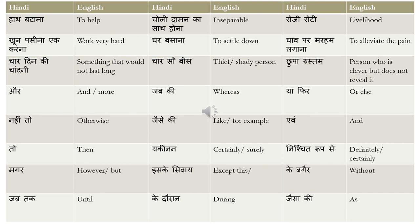Back to joining words: 'or' means 'and' or 'more'. 'Jab ki' means 'whereas'. 'Yaa phir' means 'or else'. 'Nahi toh' means 'otherwise'. 'Jese ki' means 'like' or 'for example'. 'Evam' means 'and'. 'Toh' means 'then' — for example, 'agar yeh karoge toh yeh hoga' means 'if you do this then this will happen'. 'Yakinan' means 'certainly' or 'surely'. 'Nishchit rup se' means 'definitely' or 'certainly'.